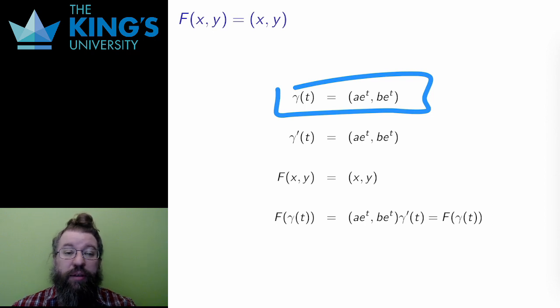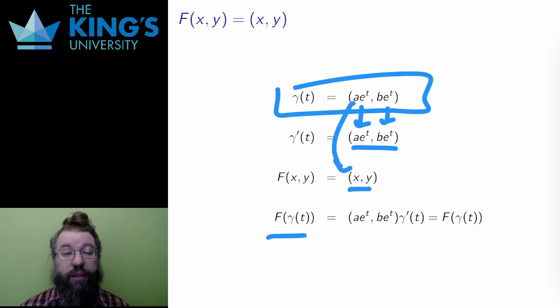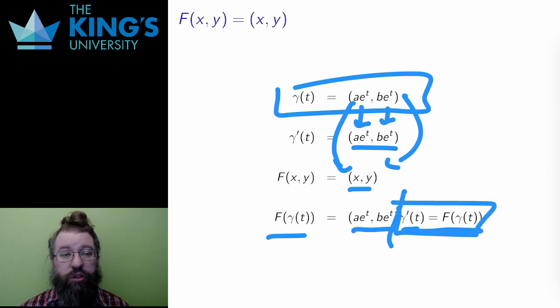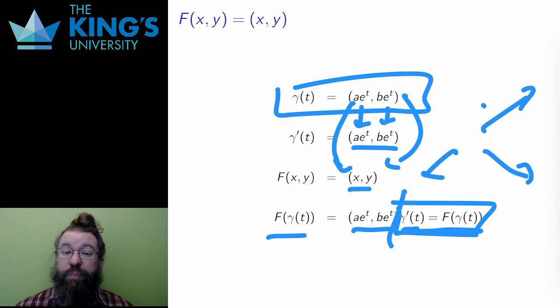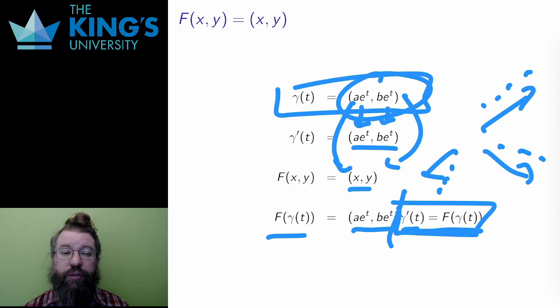These outward pointing rays have definition γ(t) equals (ae^t, be^t), where (a,b) defines some direction of the ray. Again, take the derivative. The derivatives here are just the same functions due to the exponentials. Then evaluate the field on the curve, replacing x with ae^t and y with be^t, and then compare. The derivative of the curve is exactly the same as the field evaluated along the curve. These curves go straight outward from the origin, which was obvious from the diagram. What wasn't obvious from the diagram is the rate of movement. The speed of these curves grows exponentially to match the growing tangent vectors of the field.